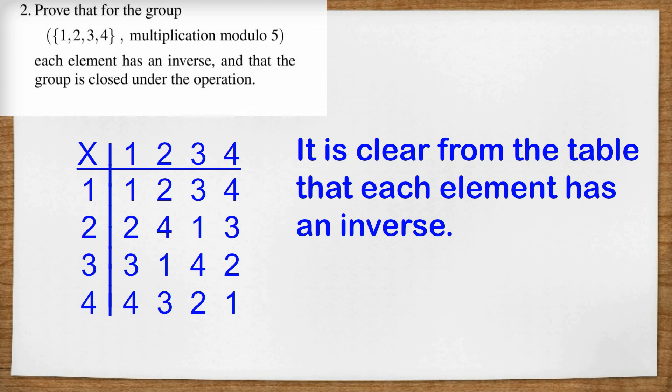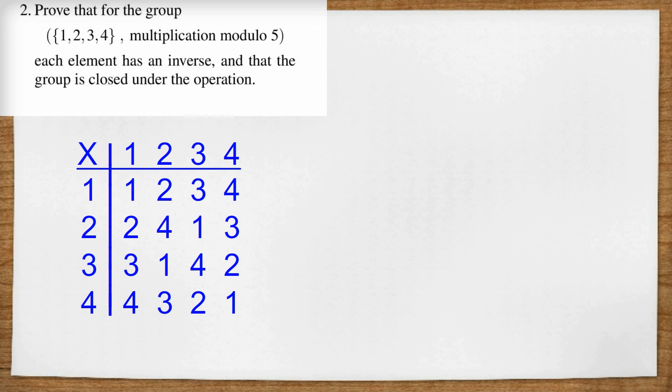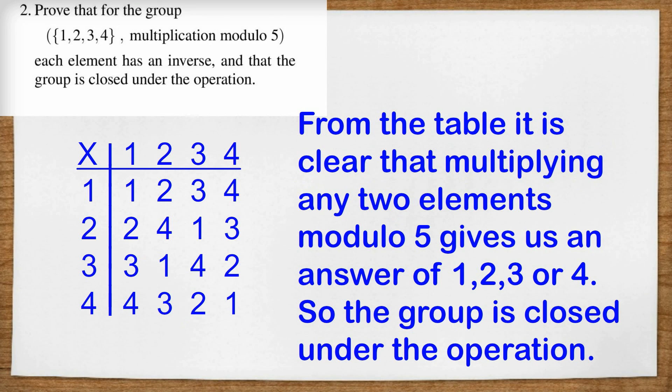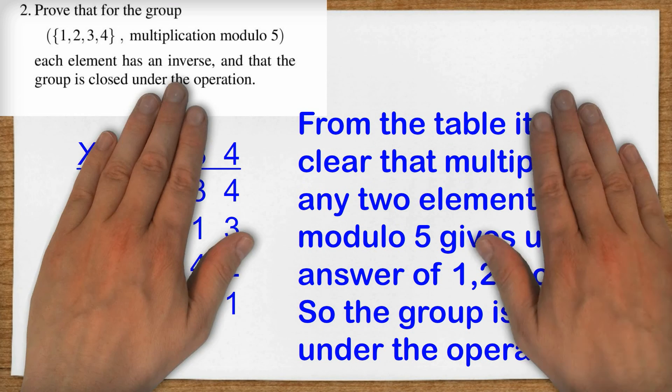It's also clear that when we perform the operation we always get an answer of one, two, three or four. So the group is closed under the operation. If you think about it, if we're dealing in remainders when we divide by five, the only possibilities would be zero, one, two, three or four, and we don't get any zeros here. So from the table, it is clear that multiplying any two elements modulo five gives us an answer of one, two, three or four. So the group is closed under the operation.